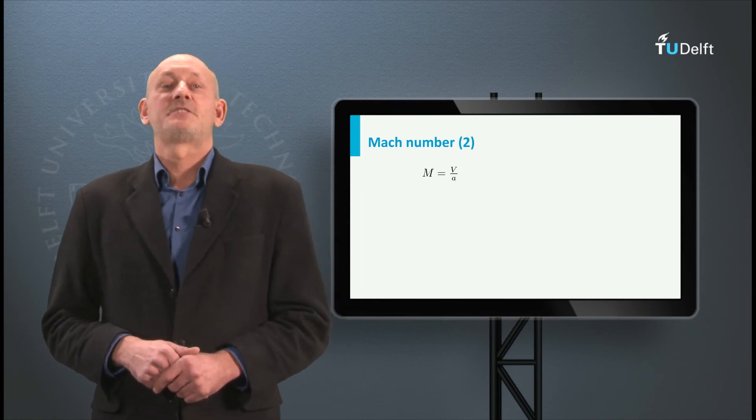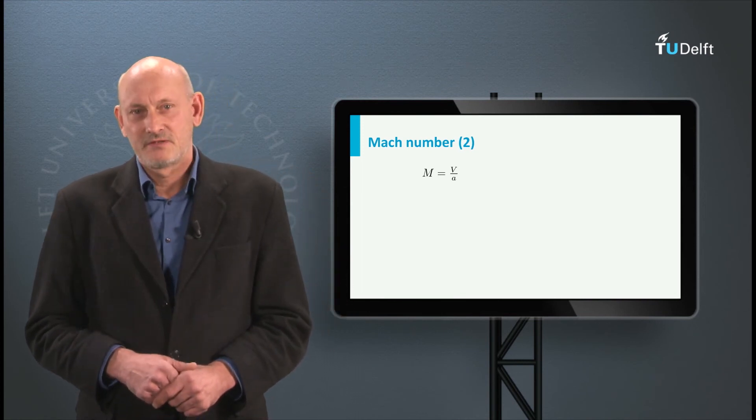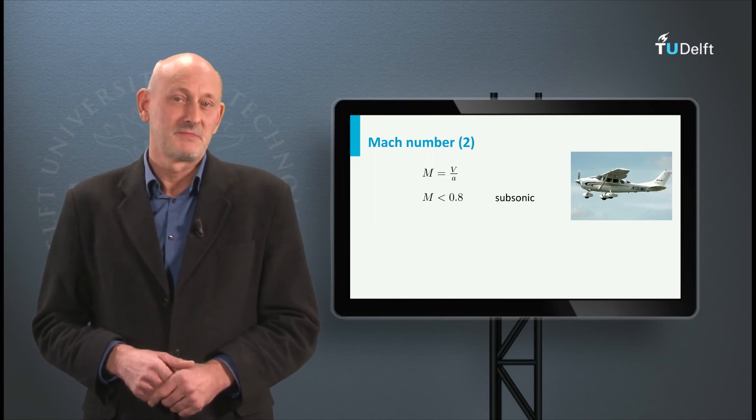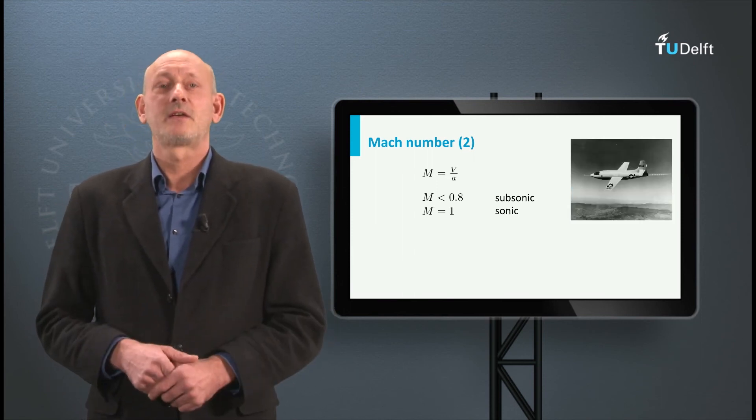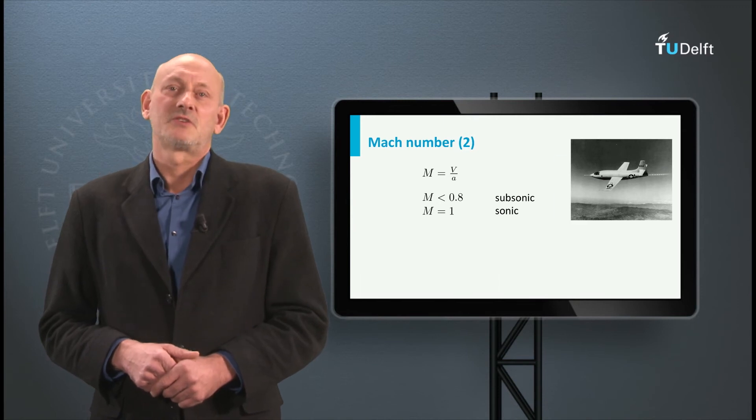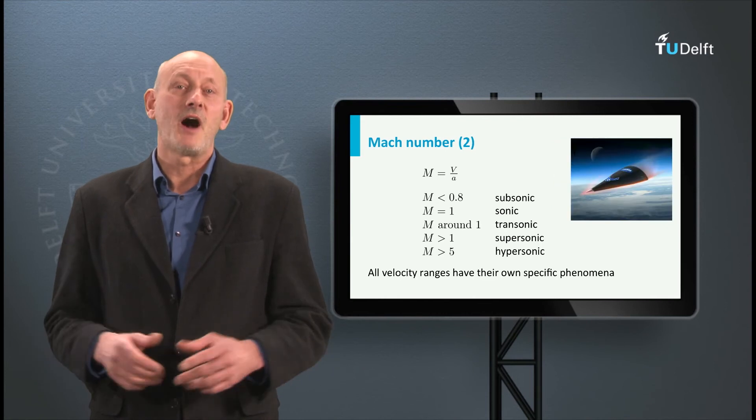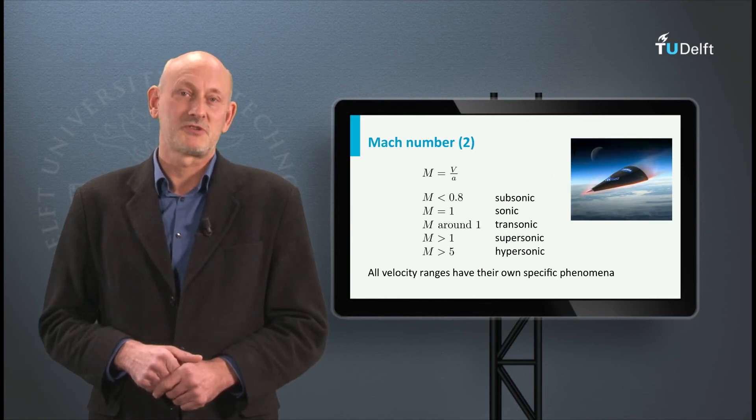Flight can be roughly classified into five categories. M smaller than 0.8 is called subsonic, M equals 1 is called sonic, M around 1 is called transonic, M higher than 1 is called supersonic and finally M higher than 5 is called hypersonic.